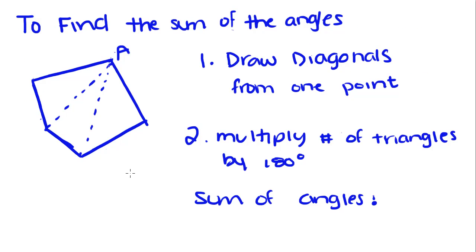To find the sum of the angles, pick a vertex. We picked vertex A and draw all possible diagonals from that point. There's one right there and one right there.